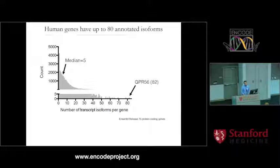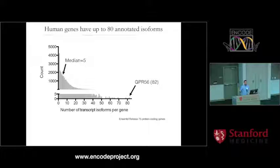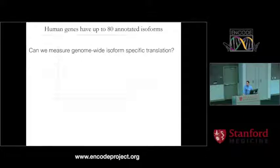The human transcriptome is very complicated — according to the Ensembl annotations, the median human gene has about five annotated transcript isoforms. A common method to measure translation across the genome is ribosome profiling, where you digest messenger RNA down to a small fragment that's protected by the ribosome. However, when you do that, you lose the transcript context that the ribosome-protected fragment was derived from. So I wanted to come up with an alternative approach to actually measure transcript-specific translation across the genome.